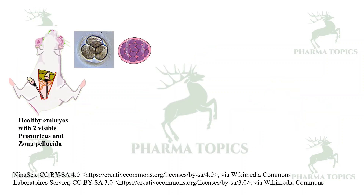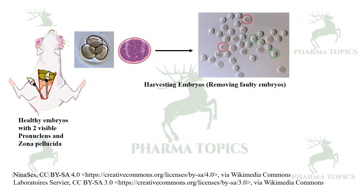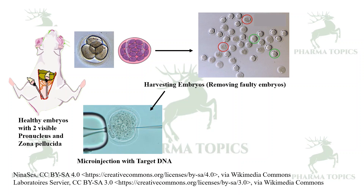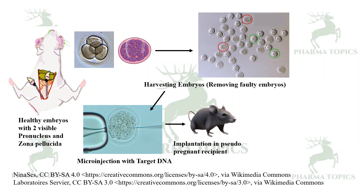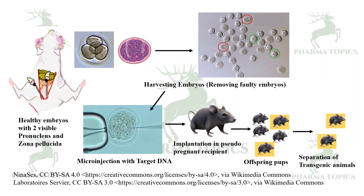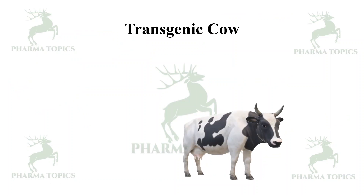Next, healthy embryos are harvested. A healthy embryo should have two visible pronuclei and an intact zona pellucida. Faulty embryos are identified and removed, and only the good embryos are selected. Microinjection of the target recombinant DNA is then carried out into the good embryos, which are implanted into a pseudo-pregnant recipient. The offspring produced may include non-transgenic animals, so the next important step is separation of the transgenic mice from non-transgenic ones.